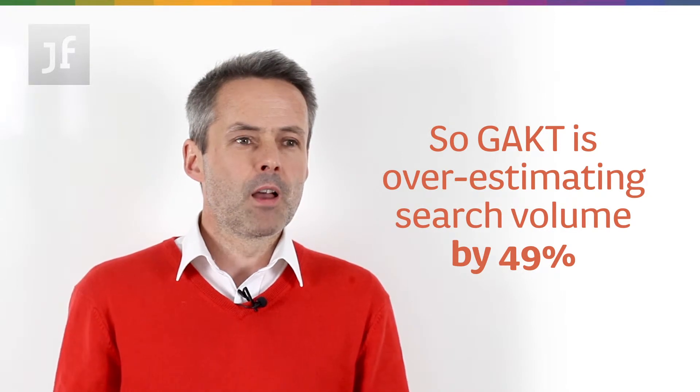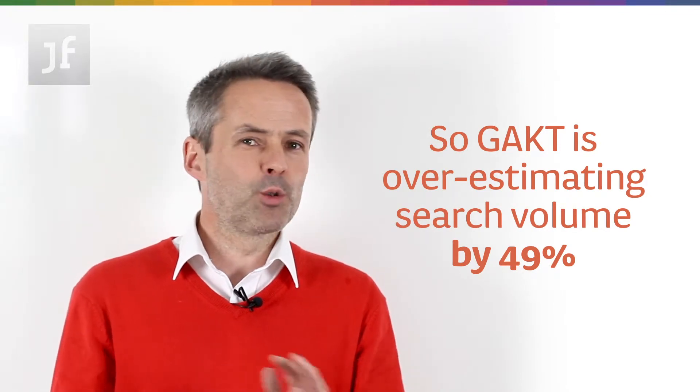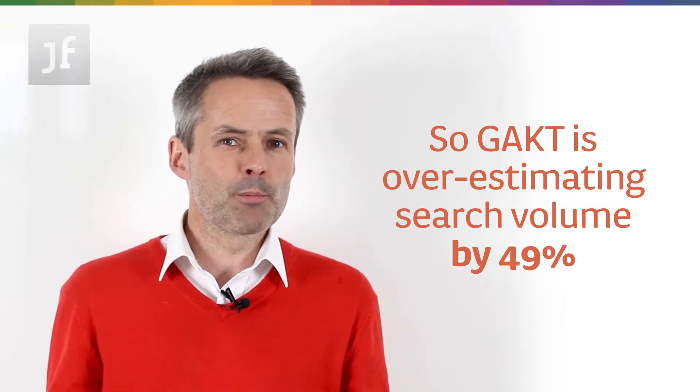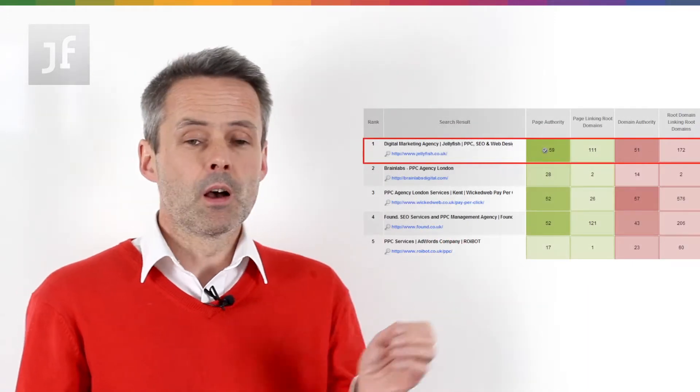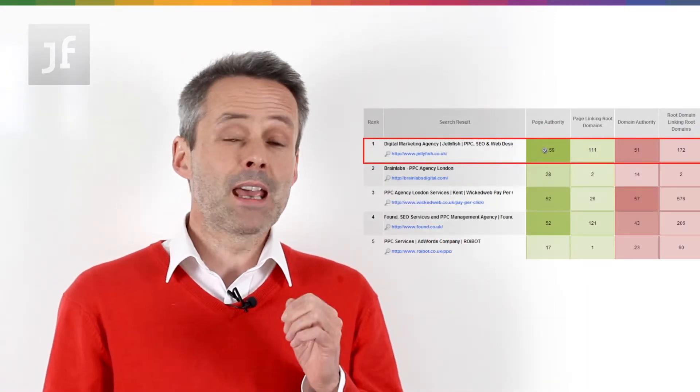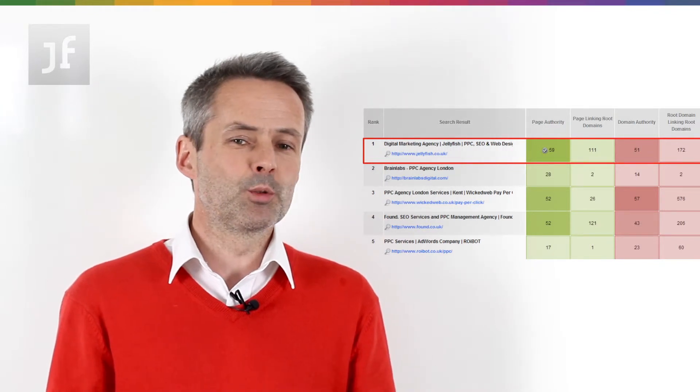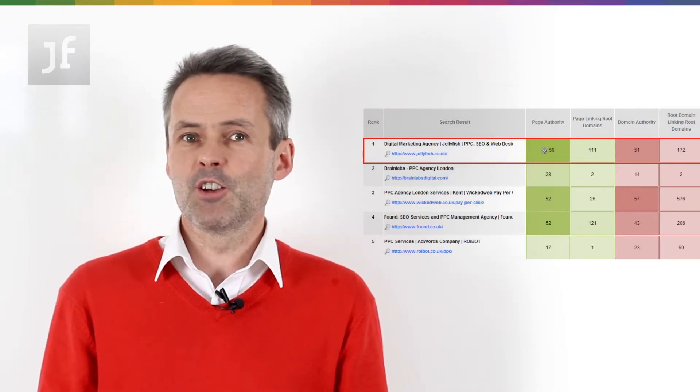Just hold that thought, because imagine that kind of discrepancy magnified across a whole bunch of keywords — that's quite a big data error. The second thing to bear in mind is that when looking at an SEO forecast, we need to estimate what kind of visibility gains we can deliver across your keyword set. There are some data points we can use for that, and what we can see here is an analysis from the SEO Moz keyword difficulty tool around the keyword 'PPC agency'.